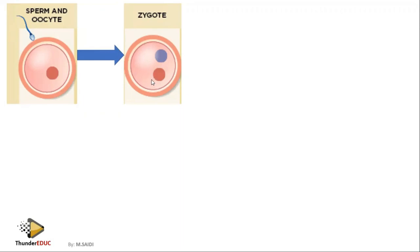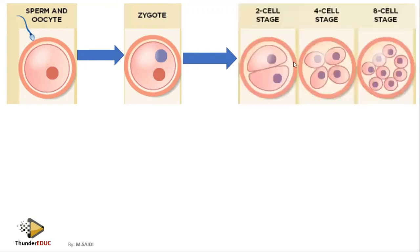The zygote has two sets of chromosomes — one from the father and one from the mother. The sperm is haploid, with one set of chromosomes, and the ovum is also haploid with one set of chromosomes. So haploid plus haploid gives you a diploid zygote.